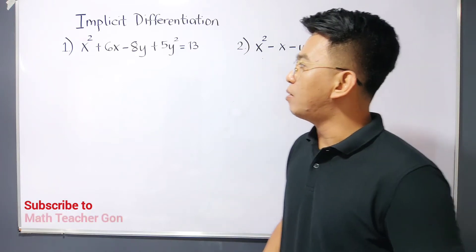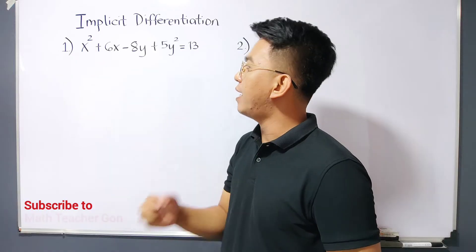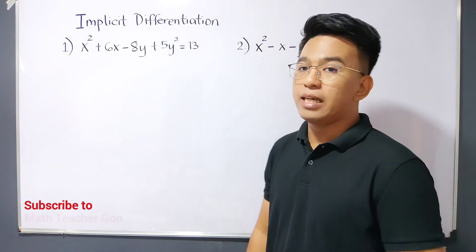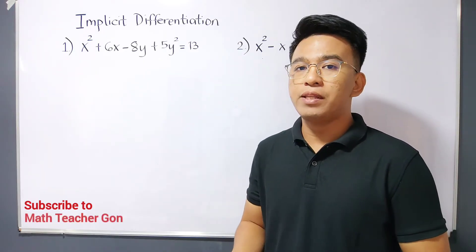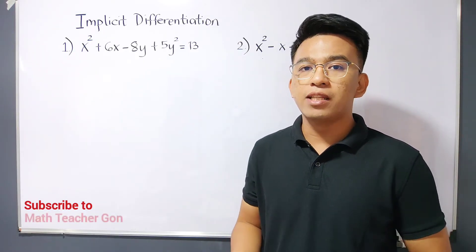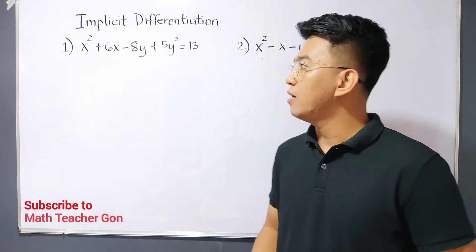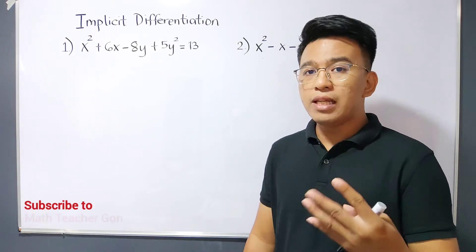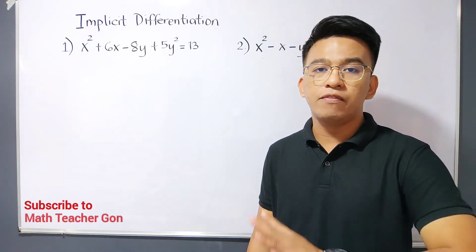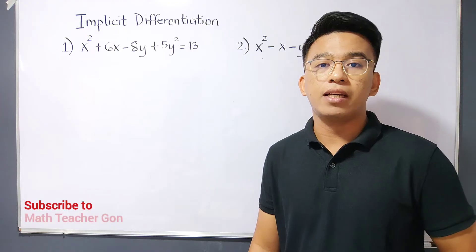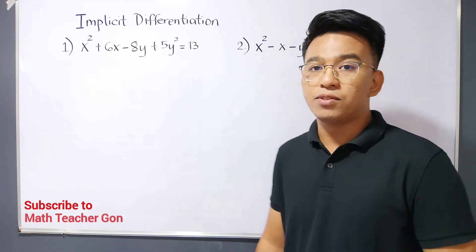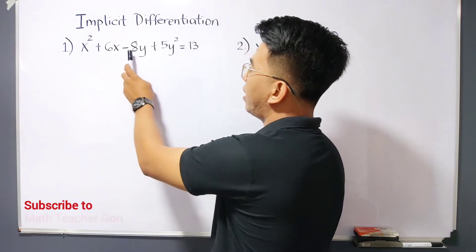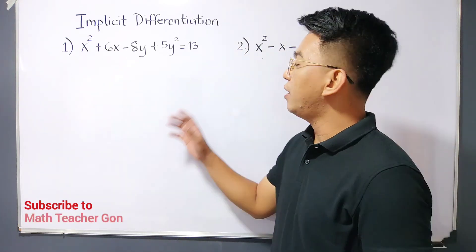Let's start with item number one. We have x squared plus 6x minus 8y plus 5y squared equals 13. So how are we going to derive or differentiate this implicitly? Don't worry, you can still apply your knowledge on how to differentiate from basic calculus or differential calculus.